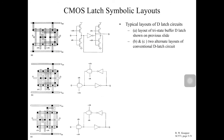Looking at typical layouts for the D-latch circuit, there are many ways to implement it. One approach uses a clock-gated inverter with an added transistor to make a compact layout. You can also use transmission gates for both the input and storage portions. The conventional D-latch circuit can be shrunk further to make it even more compact.